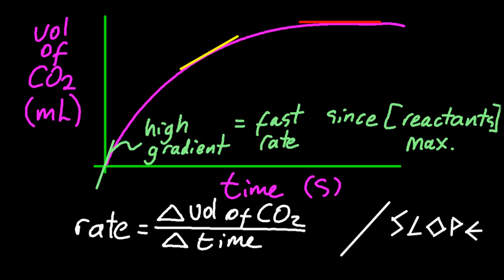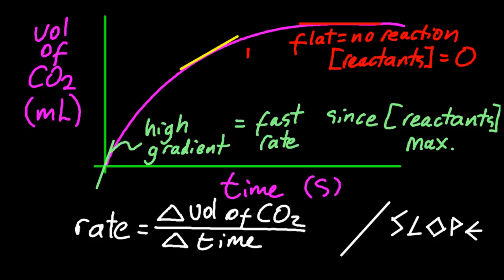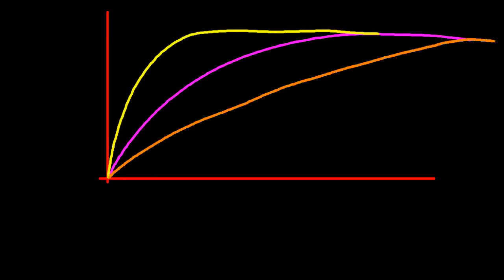It slows down there, about halfway along, and at the end, the tangent to the line shows the gradient is zero. It's flat, so there's no reaction going on. The change in the volume of carbon dioxide over time is zero. That's because there are no reactants left, or at least no limiting reactants left, when the curve flattens out.